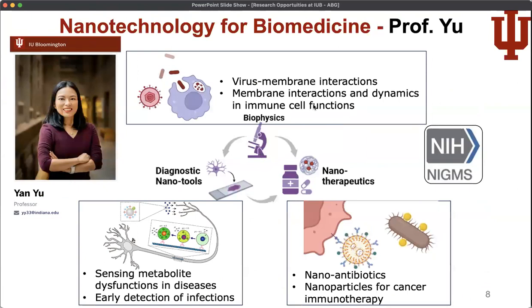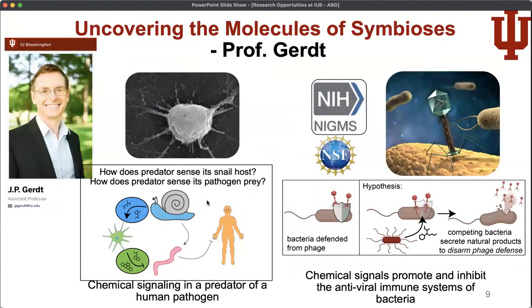Yan Yu works on a variety of things including virus-membrane interactions and dynamics in immune cell functions. Yan Yu works on diagnostic tools — sensing metabolites and functions in diseases, and nanoparticles for cancer immunotherapy. Professor Gert works on how different animals and bacteria on a microscopic scale sense predators, sense food, and pick the path that they walk on.